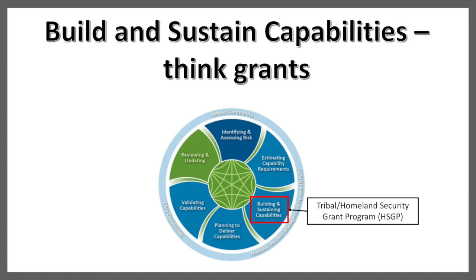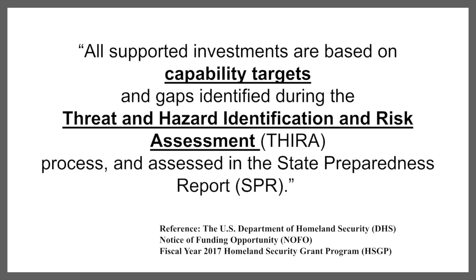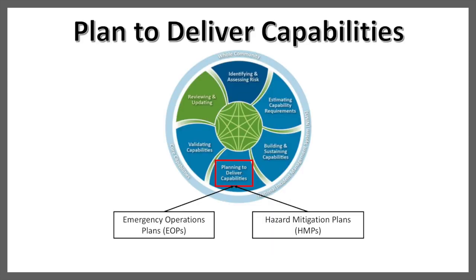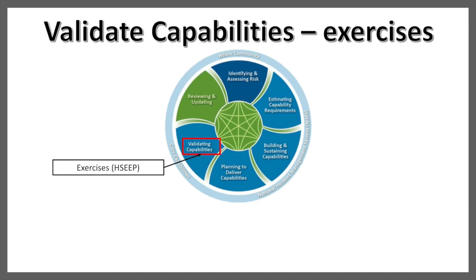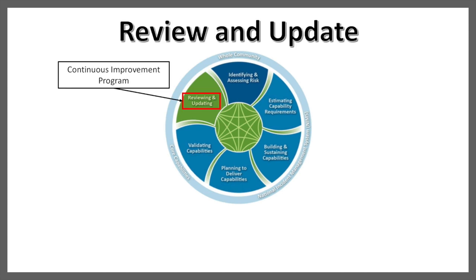Six months from now, you may want to apply for more Homeland Security grants, and FEMA is going to want to see that your investment justification for your 2018 Homeland Security Grant is based on the Threat and Hazard Identification and Risk Assessment from 2017. You're going to get some money, you're going to build those capabilities, then you're going to plan to deliver them. You'll eventually validate them through some sort of exercise, and then you'll start the whole process all over again. In short, the context statement you write today for your Thyra is going to set in motion all the work you're going to do in the national preparedness system for the next three to five years.